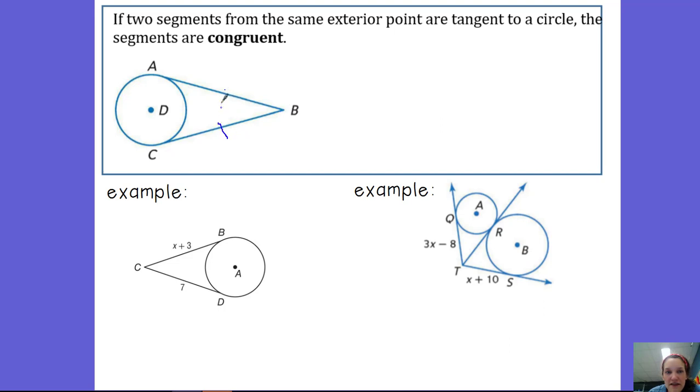AB and CB are going to be congruent to each other.